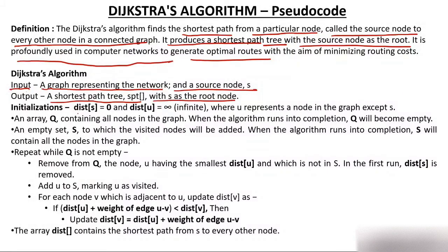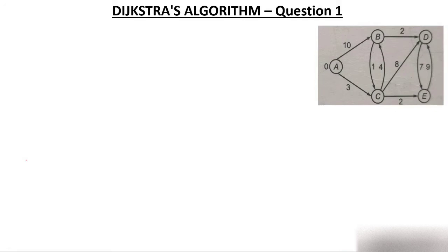You initialize the source node with 0 and all other nodes with infinity. If you are directly watching this video, I recommend watching the Prims video first — it will be easier. Now, you make a matrix — an array Q containing all the nodes of the graph. Let's solve the question first, and after that we'll read the algorithm. It will become very easy.